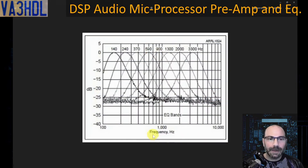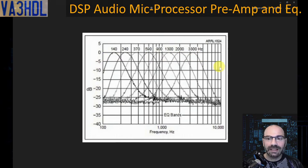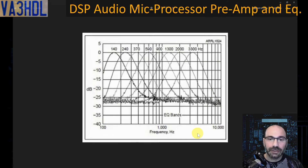The equalizer has 8 bands: 140, 240, 370, 190, 900 Hz, 1.3 kHz, 2 kHz, and 3.3 kHz. This is more or less the response of the equalizer on these bands, just for reference.